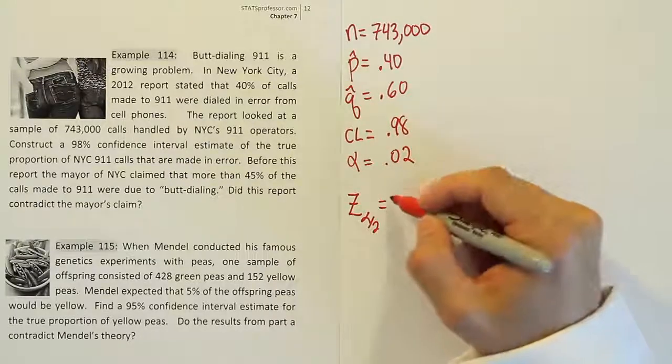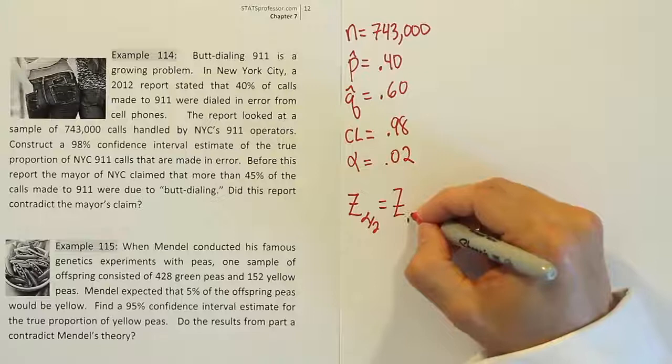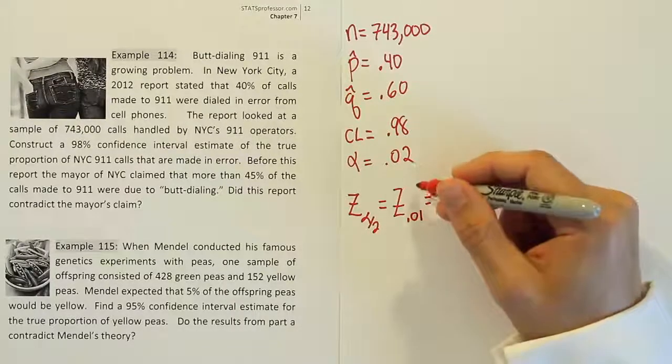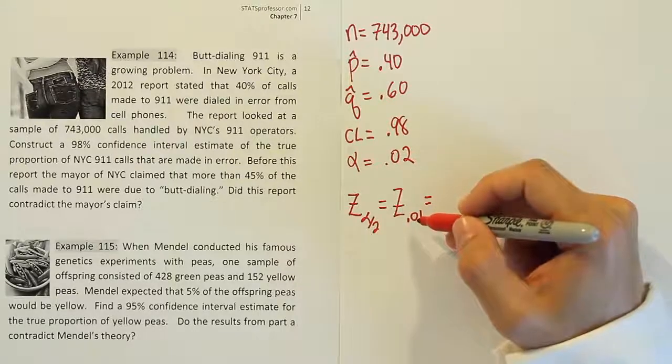So we're going to go to our table and look up z alpha is 0.02, so half of alpha would be 0.01. So we're going to go to the 0.01 column on a t-table and go straight to the bottom where they keep the z values to figure out that number. Let's go do that right now.